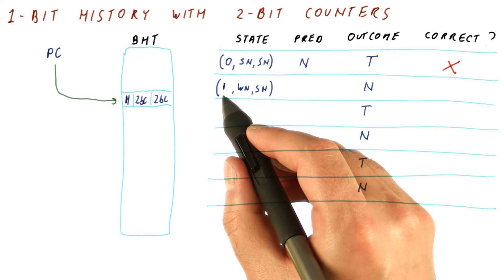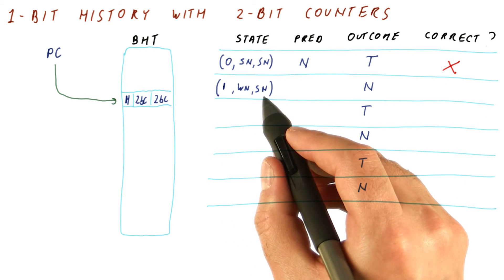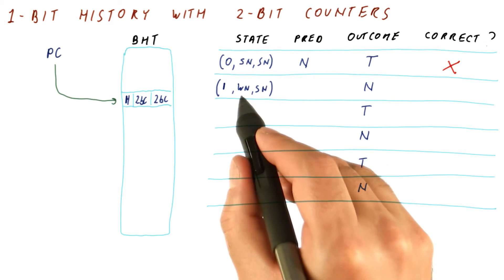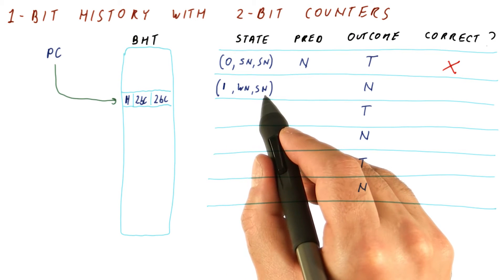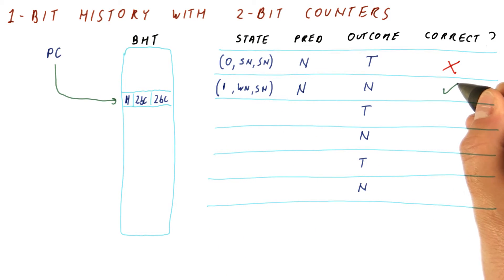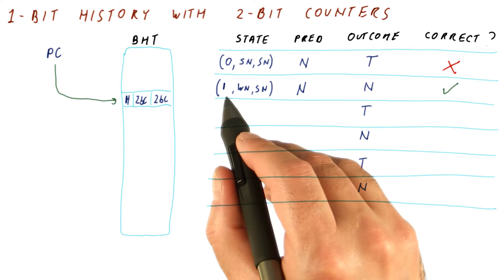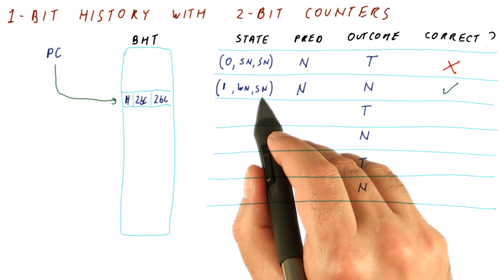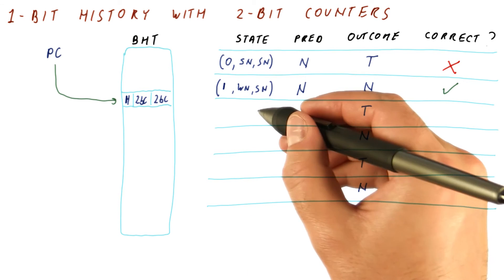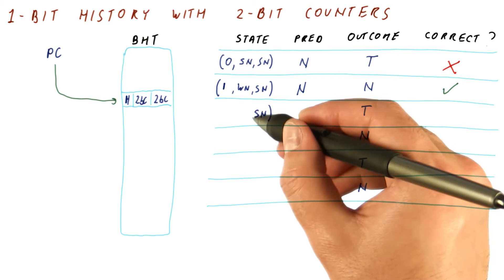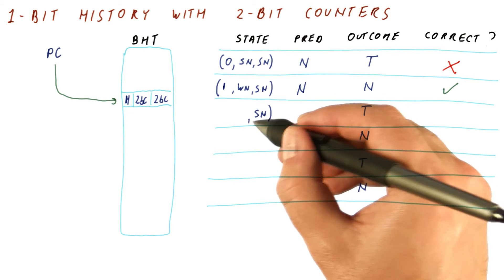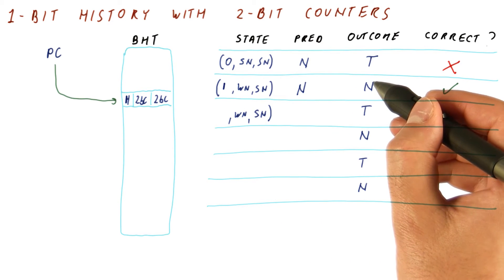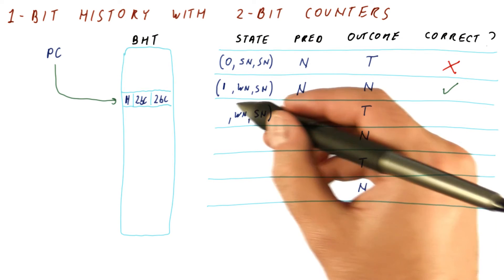When the history is one, we're going to be using the second of the two counters. We use the history to index into the array of counters — when it's one, we use this one. The prediction will be not taken, and we will be right. The state of the predictor is now updated so we use the history to index again into the counter and modify it according to the outcome. It stays strong not taken because that's already as convinced about the not taken outcome as it can be. The other counter stays the same, and the history now shifts in zero because of the not taken outcome.